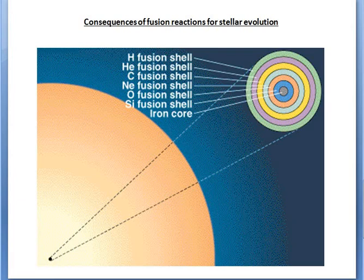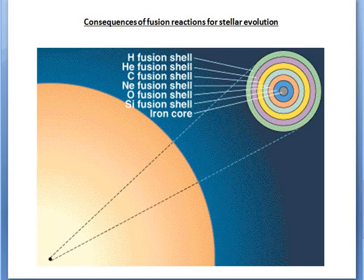The second consequence is that each successive reaction has a higher or steeper temperature dependence. The temperature dependence for helium fusion is much stronger than for hydrogen fusion. Even within hydrogen fusion, the temperature dependence for the CNO cycle is stronger than for the pp chain. This steeper temperature dependence means the reactions occur in a more concentrated region of the core, involving a region of smaller mass overall.